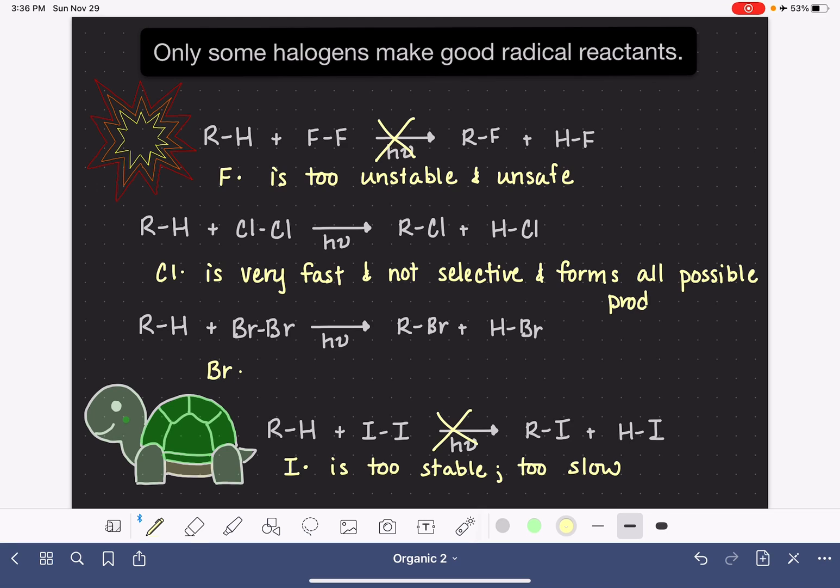Sometimes this is a good thing because sometimes the only way that we can get a particular alkyl halide is to use the chlorination process, because we know that it's going to give us every single possible product.